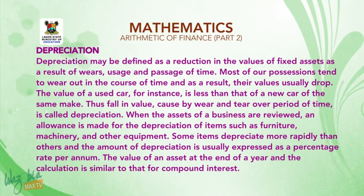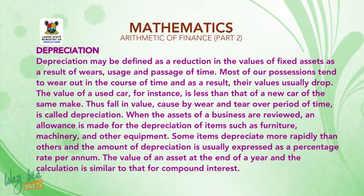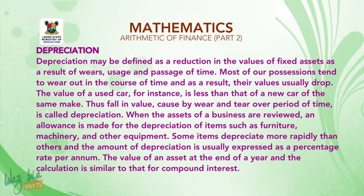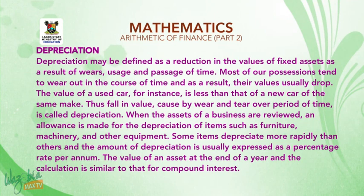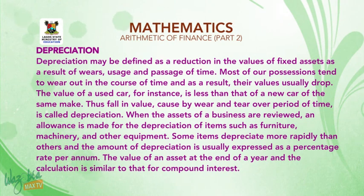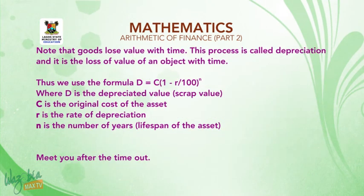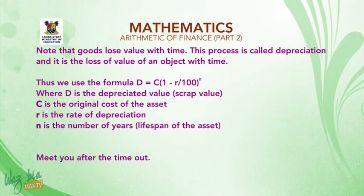When the assets of a business are viewed, an allowance is made for the depreciation of items such as furniture, machinery, and other equipment. Some items depreciate more rapidly than others, and the amount of depreciation is usually expressed as a percentage rate per annum. The value of an asset at the end of a year is calculated similarly to compound interest. Note that goods lose value with time — this process is called depreciation.